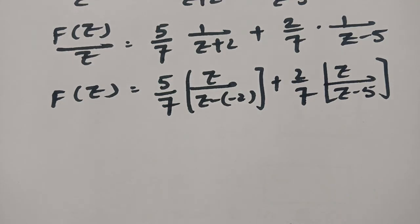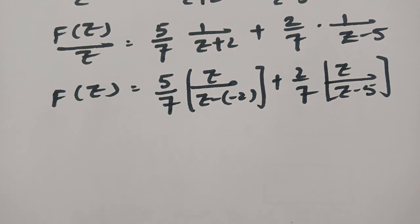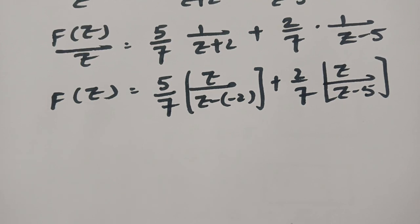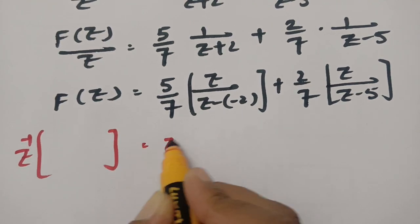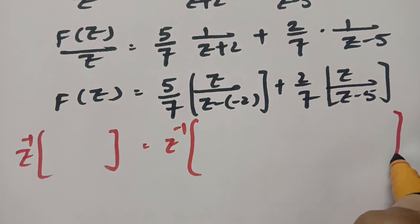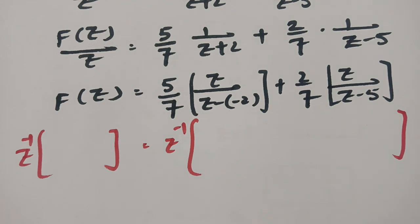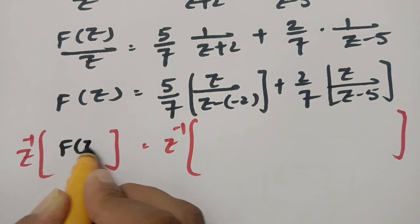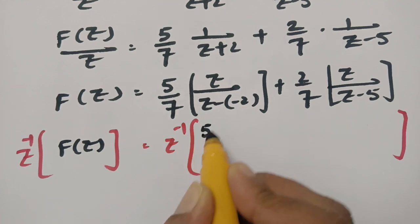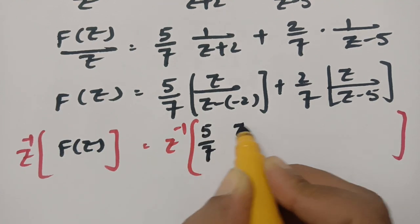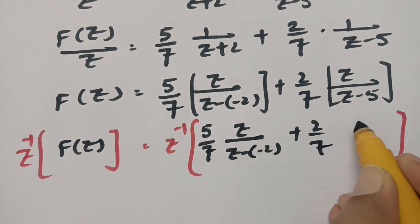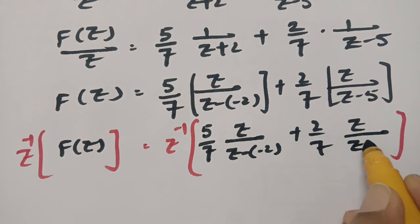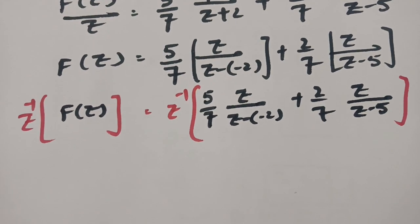Now I will apply Z inverse on both sides. Z inverse of F of Z is equal to 5 by 7 times Z inverse of Z by Z minus of minus 2 plus 2 by 7 times Z inverse of Z by Z minus 5.